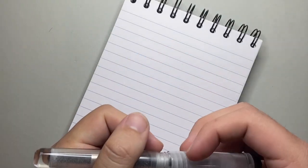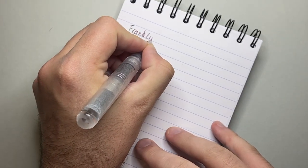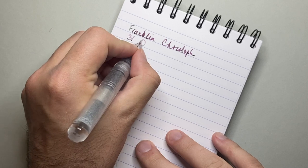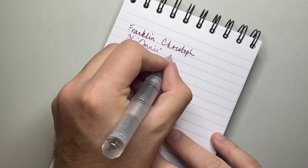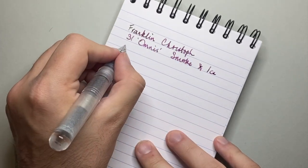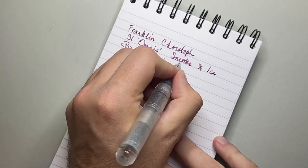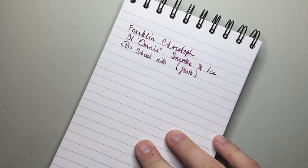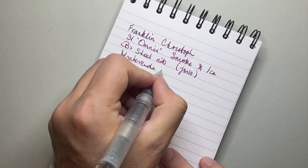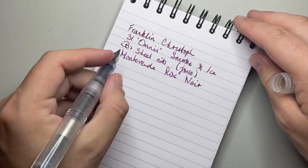Let's do a quick writing sample now. I have Clairefontaine paper here. This is the Franklin Kristoff Model 31, the Omnis, in smoke and ice. This is a broad steel nib, made by Jovo, tuned by Franklin Kristoff. And the ink I have here is Monteverde Rose Noir.